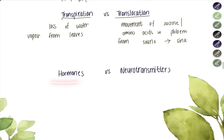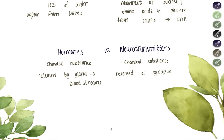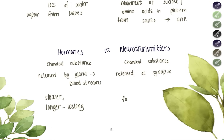Hormones are chemical substances released by glands into the bloodstream. They are slower acting but their effects are longer-lasting. Examples include estrogen, progesterone, testosterone, and insulin. Neurotransmitters are chemical substances released at the synapse. They are much faster but only affect nearby neurons.